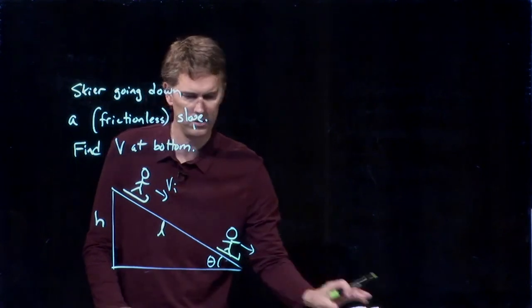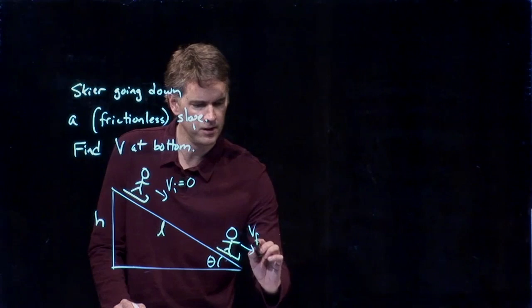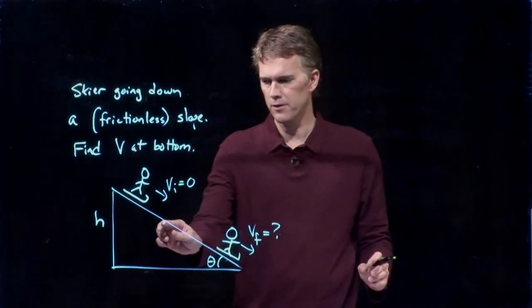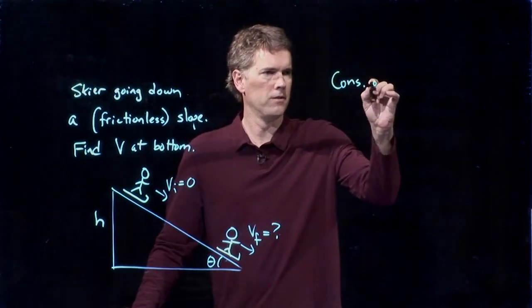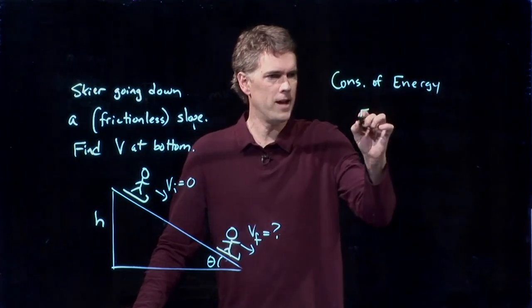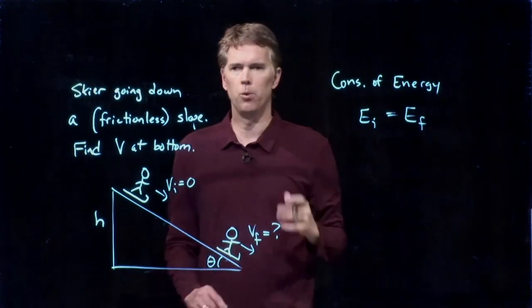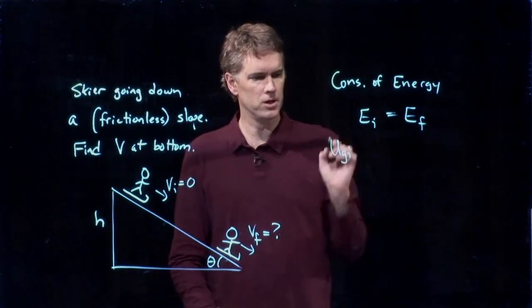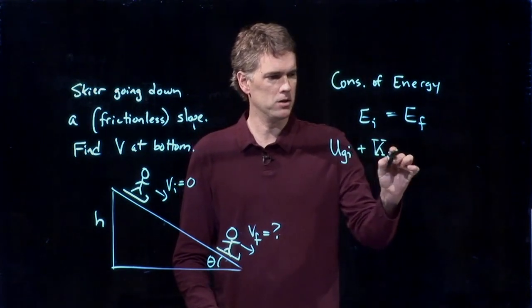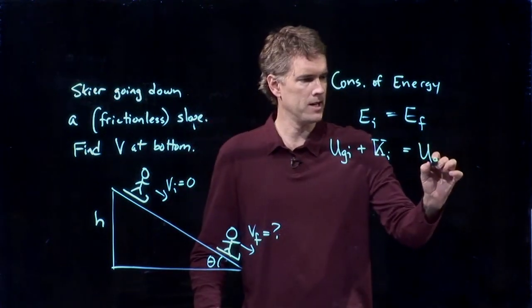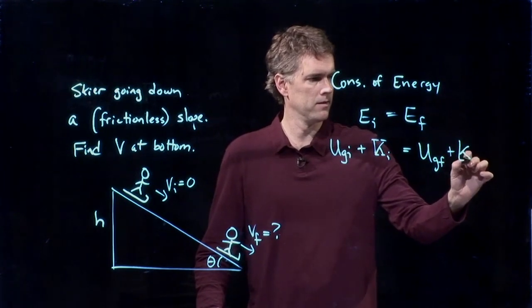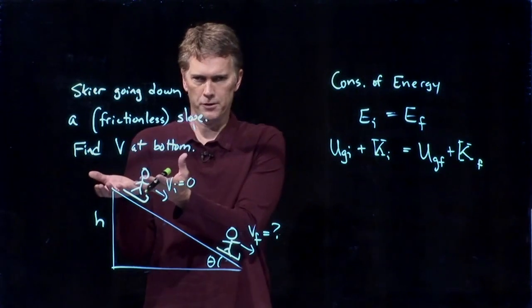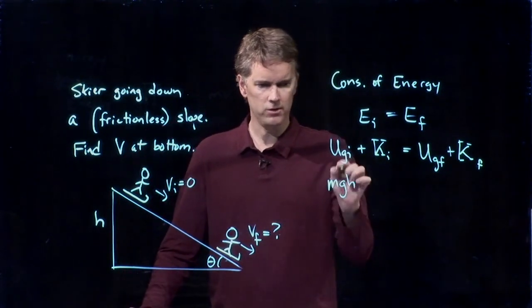So we will call this v initial was zero. They started at rest. And v final is what we're looking for. So Kevin suggested we use conservation of energy. Conservation of energy is just that. Energy is conserved. Whatever energy we have initially has to be equal to whatever energy is in our system finally. And initially we have two things. We have gravitational initially. We maybe have some kinetic initially. In the final picture we're going to have gravitational final plus kinetic final.